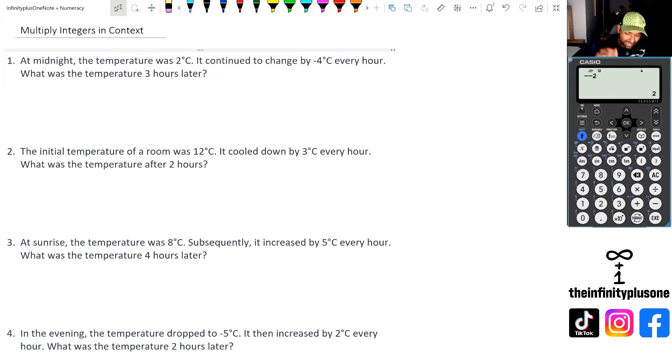Let's get going with this question. Question one: at midnight, the temperature is two degrees and then it continues to change by minus four degrees every hour. What was the temperature three hours later? So we've got a temperature change, we're starting with two degrees.